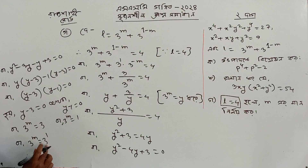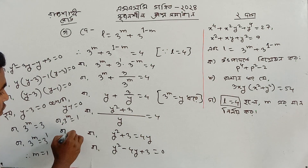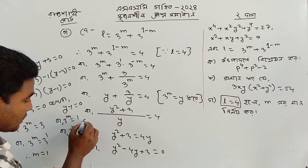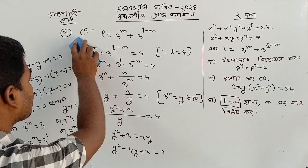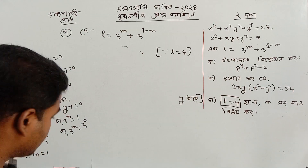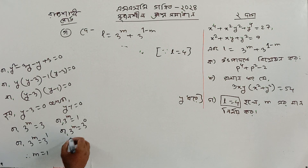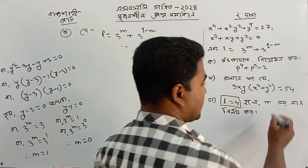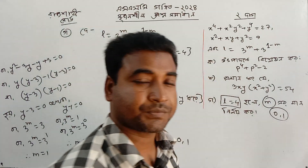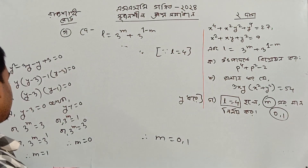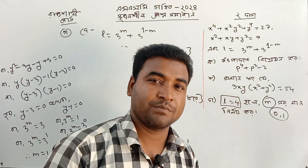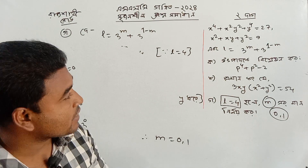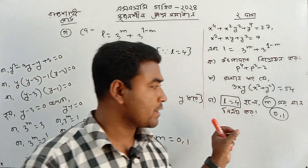So what do we do with the base? If we look at base 3, if 3 to the power m equals 3 to the power 1, then m equals 1. If 3 to the power m equals 3 to the power 0, then m equals 0. So the answer is m equals 0 and m equals 1. The answer is zero and one.